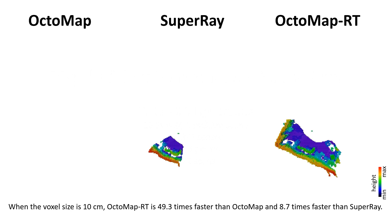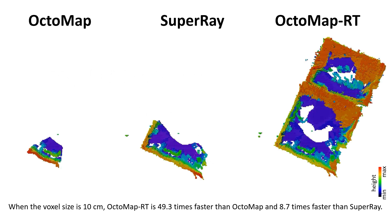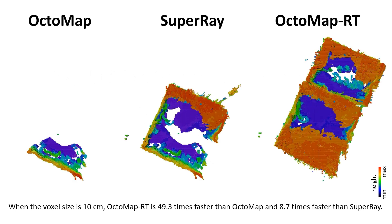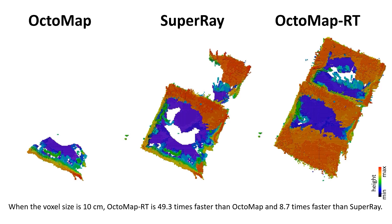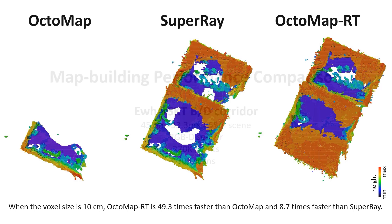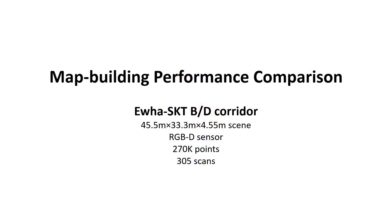The size of the map is 16.5 meters by 24.1 meters by 3.1 meters, with 270,000 points per scan. The map is built with voxel sizes of 10 centimeters. We compare OctomapRT, Octomap, and SuperRay while building a map from EYSKT building's corridor point cloud.